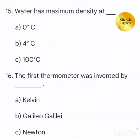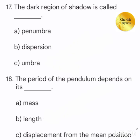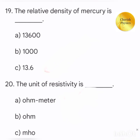Water has maximum density at. The first thermometer was invented by. The dark region of shadow is called. The period of the pendulum depends on its. The relative density of mercury is.